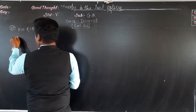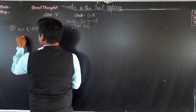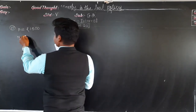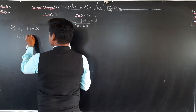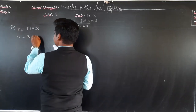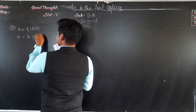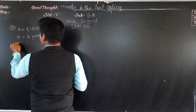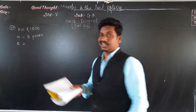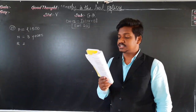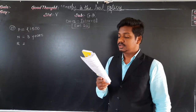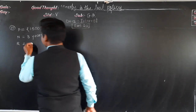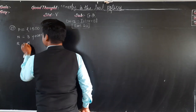For how much period is the loan taken? For 3 years, the loan is taken for 3 years. And at what rate of interest? The rate of interest for this loan is 5% per annum.